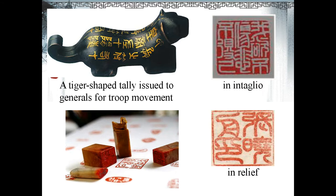Here is a tiger-shaped tally issued to generals for troop movement, with seal characters on the back. And we can appreciate some seals. Seals can be cut either in intaglio or in relief. In intaglio, the characters are concave; in relief, the characters are protruding and convex.